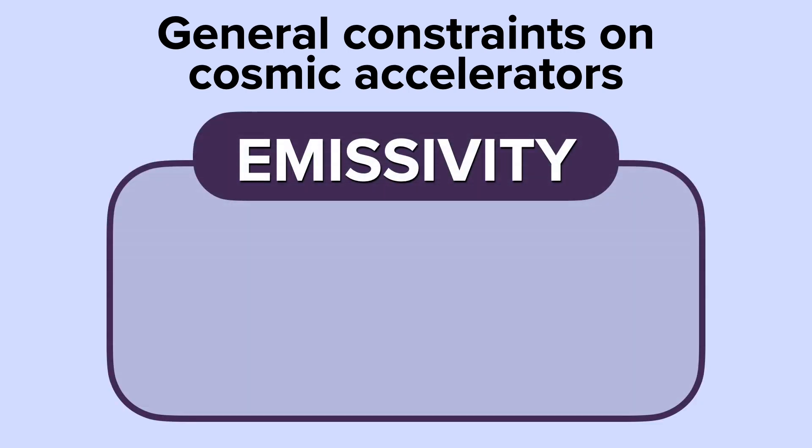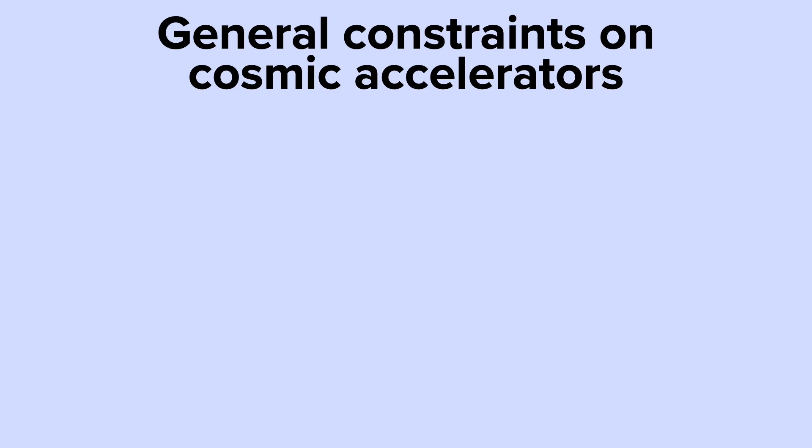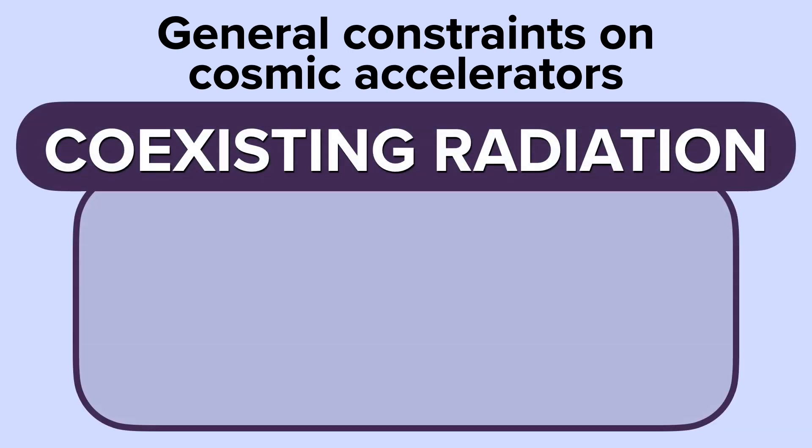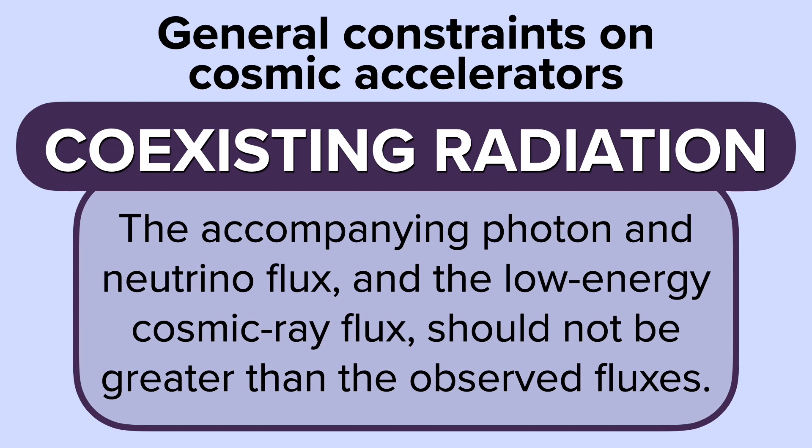Then, emissivity. The density and power of sources must be enough to account for the observed ultra-high energy cosmic ray flux. And finally, coexisting radiation. The accompanying photon and neutrino flux and the low-energy cosmic ray flux should not be greater than the observed fluxes.